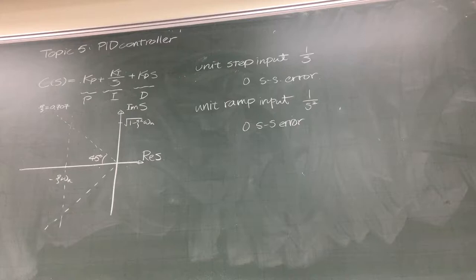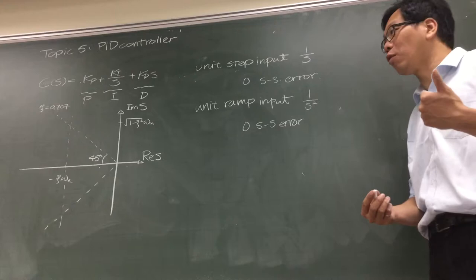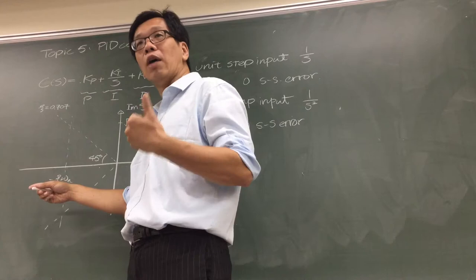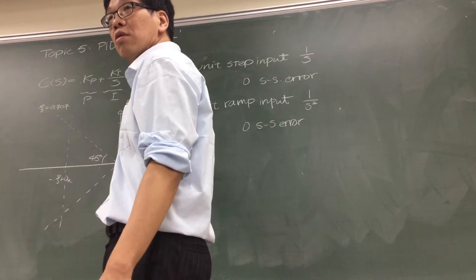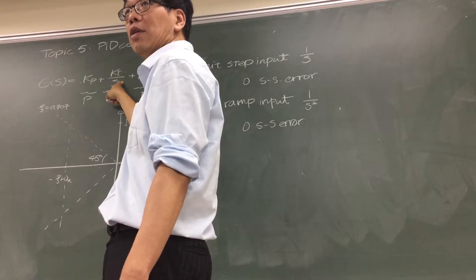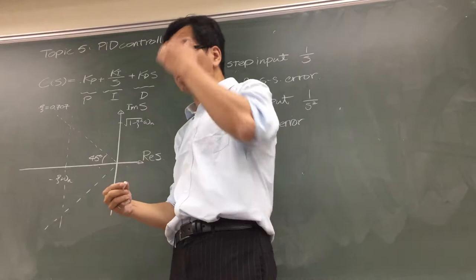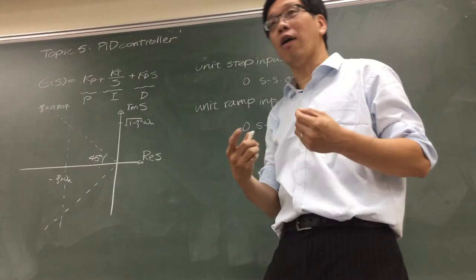Those are the things to remember in topic five. If a system requires zero steady state error, a fast response, and small overshoot, you need an integrator in the controller — meaning you need the I (integral) term. Kp makes the system faster and reduces steady state error, but increases overshoot. Ki gives zero steady state error for unit step input, but also increases overshoot.